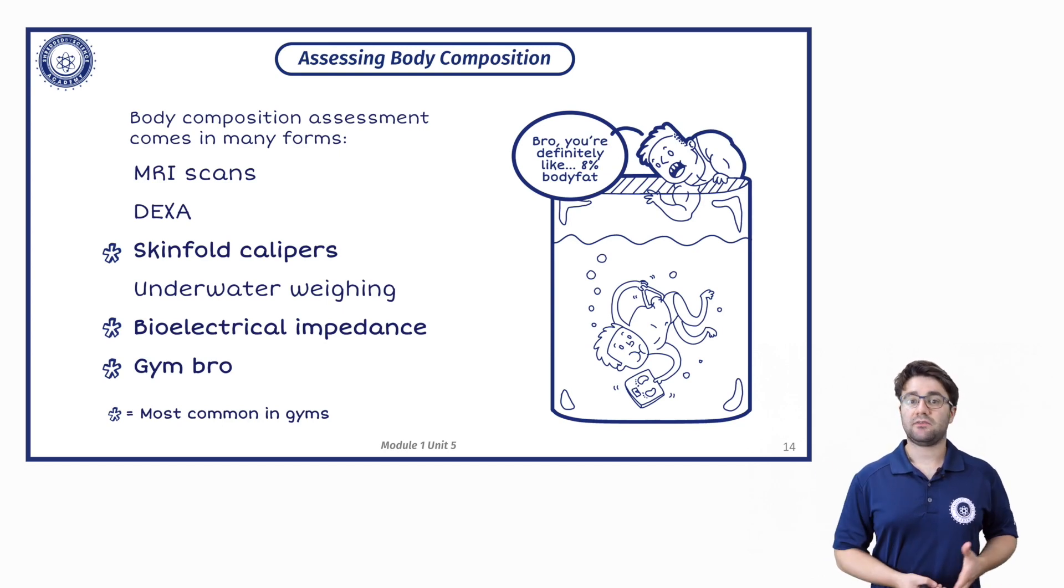Next up we have skinfold calipers, which involves pinching the amount of fat that's held under the skin at various locations across the body. We have underwater weighing, which looks at what volume of water does your body weight displace. And you can figure out somebody's rough body composition from that.